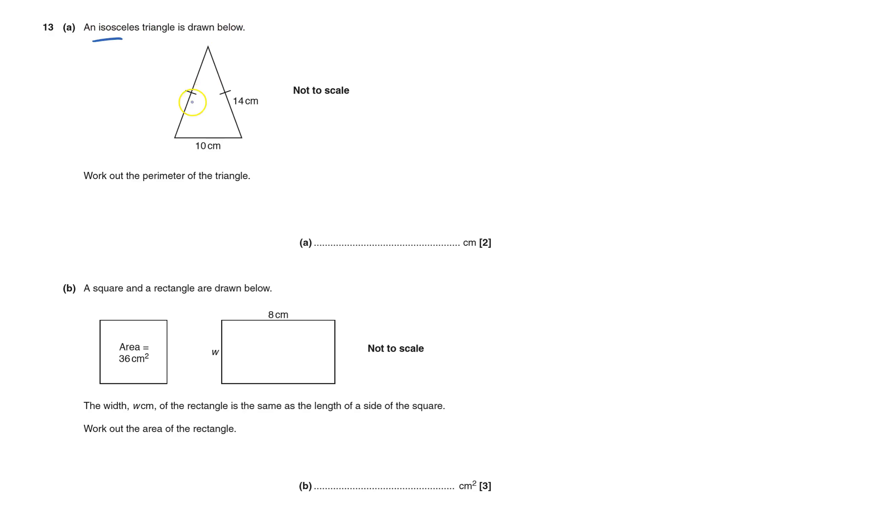Okay, an isosceles triangle is drawn below and it's showing this side and this side are both the same. So that's 14 and so is this one 14. And we've got to work out the perimeter of the triangle and that's the whole way around the outside.